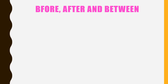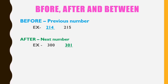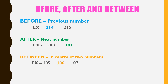Before, after, and between. 'Before' means the previous number. For example, what comes before 215? Yes, 214. 'After' means the next number. For example, what comes after 300? Yes, 301. 'Between' means in the center of two numbers. For example, what comes between 105 and 107? Yes, 106.